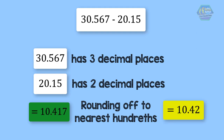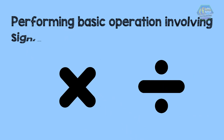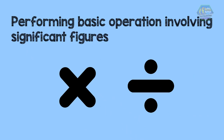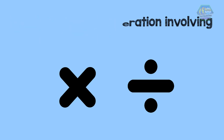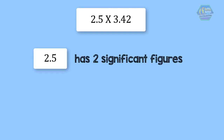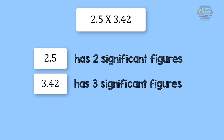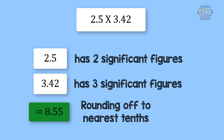For multiplication and division, the least number of significant figures in any number of the problem determines the number of significant figures in your answer. For example, 2.5 times 3.42: 2.5 has two significant figures and 3.42 has three significant figures, so the answer should be reported with two significant figures. 2.5 times 3.42 equals 8.55, then round off to give 8.6.